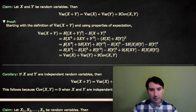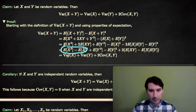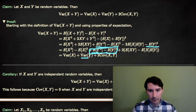Then we can rearrange the terms. We have an E of X squared here and a minus E of X squared, so we move those together. Those two combined — E of X squared minus E of X squared — give us the variance of X. Similarly, taking E of Y squared and minus E of Y squared gives us the variance of Y.